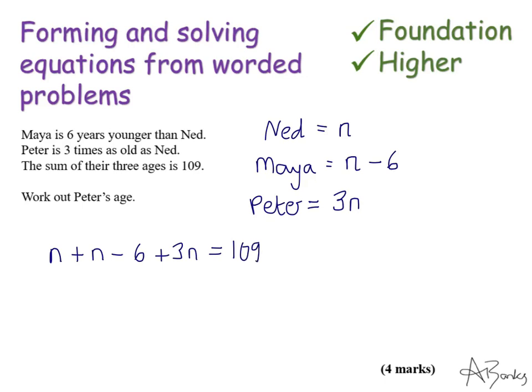So now I've just got an equation that I can solve. I can simplify my left hand side first. So I've got one, two, three, four, five n minus six is 109.